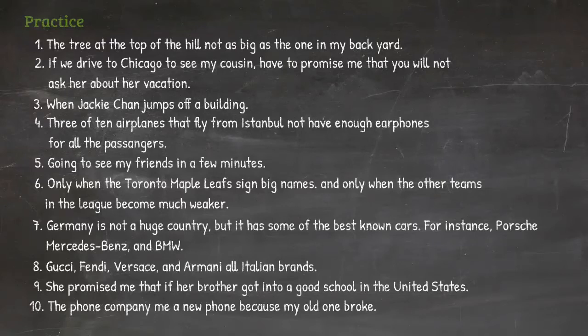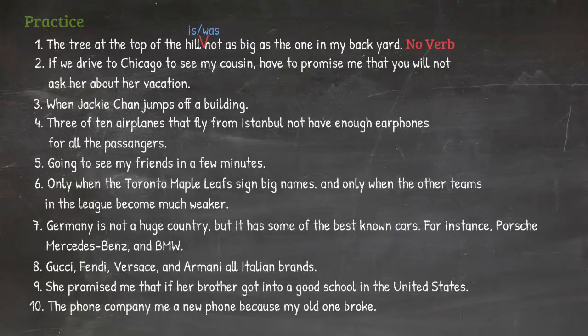Number one: 'The tree at the top of the hill not as big as the one in my backyard.' This sentence does not have a verb. The correction is: 'The tree at the top of the hill is not as big as the one in my backyard.' Number two: 'If we drive to Chicago to see my cousin, have to promise me that you will not ask her about her vacation.' There is no subject. The correction: 'If we drive to Chicago to see my cousin, you have to promise me that you will not ask her about her vacation.'